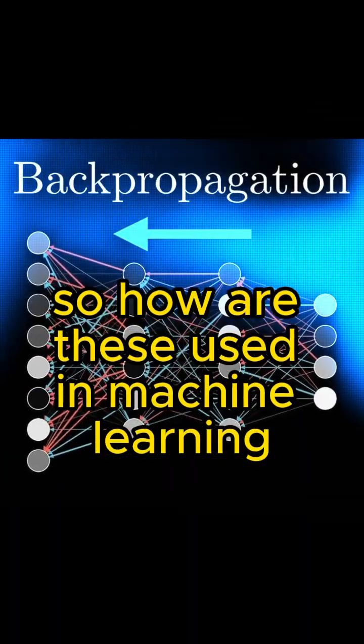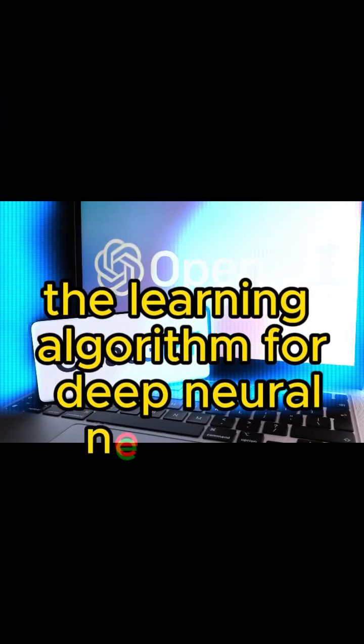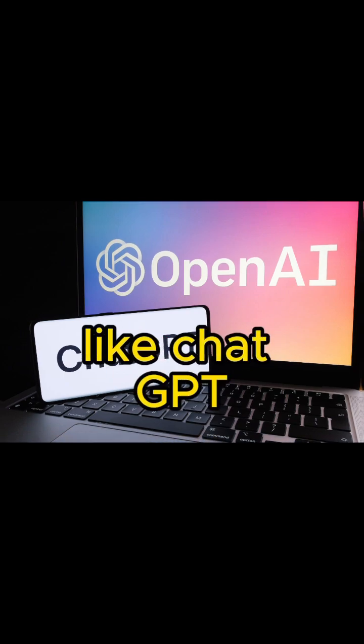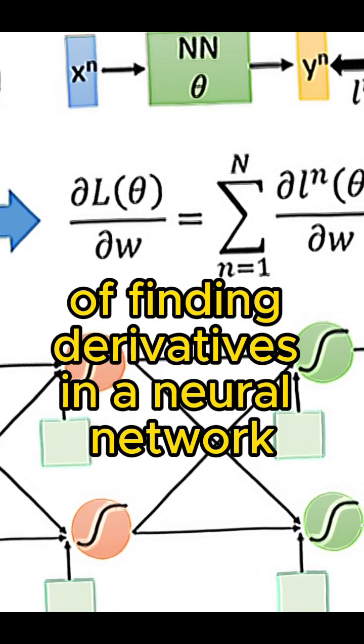So how are these used in machine learning? The most prominent example is that of backpropagation, the learning algorithm for deep neural networks like ChatGPT. Backpropagation is really just a systematic way of finding derivatives in a neural network.